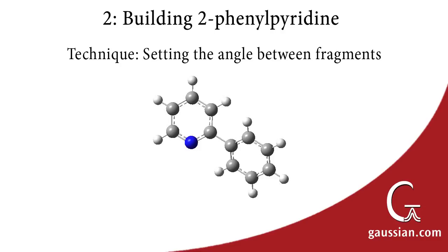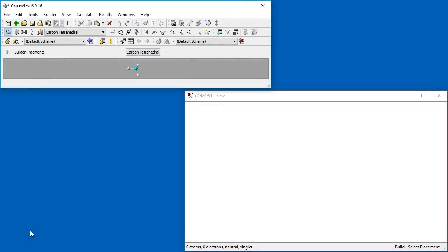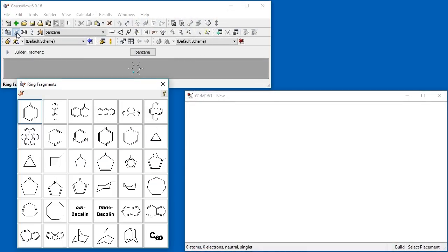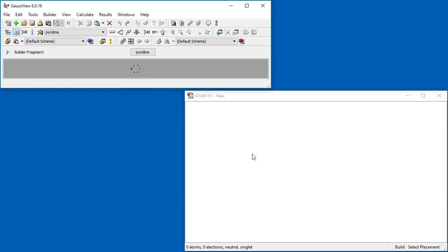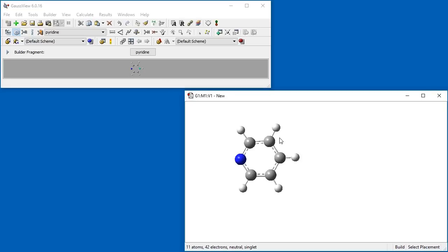In this second example, we demonstrate setting an angle between two rings by building 2-Phenyl Pyridine. To begin, we open the Ring Fragments panel, select Pyridine, and place it in the view window.